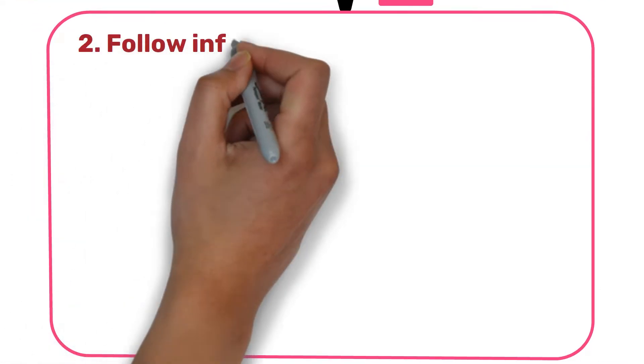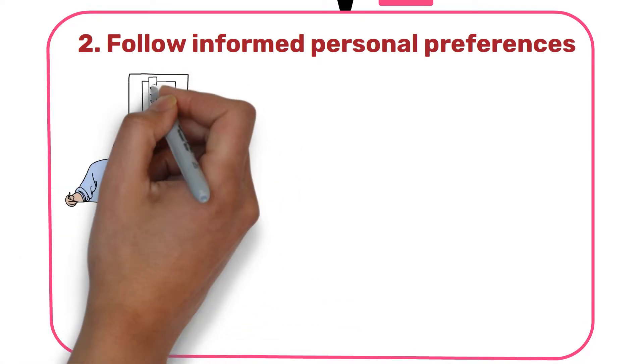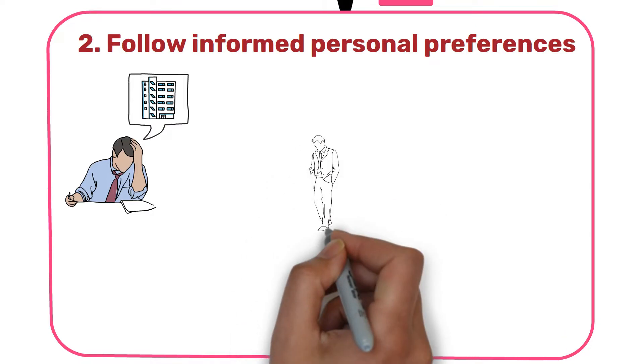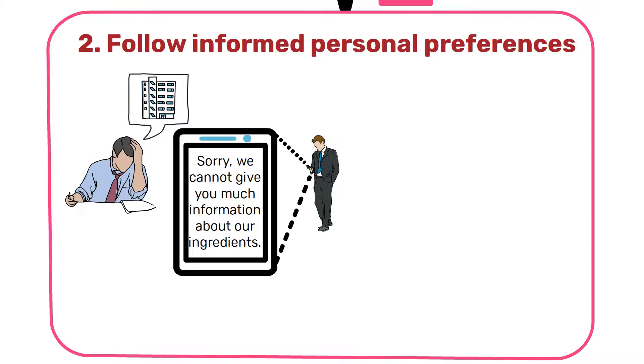Step 2: Follow informed personal preferences. Imagine someone is designing green offices and they have to use some not clearly specified ingredients from the manufacturer. In this case, they have to ask the manufacturers about the ingredients.